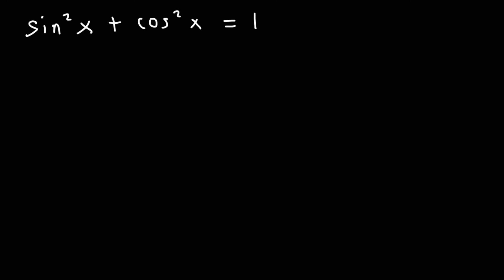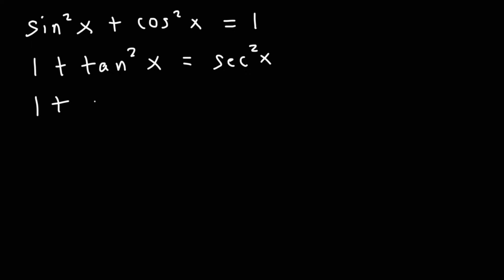First, sine squared plus cosine squared equals 1. Next, 1 plus tangent squared is equal to secant squared. This is a good review of some trigonometric formulas that you've been exposed to in the past. The next one you need to be familiar with is 1 plus cotangent squared is equal to cosecant squared.